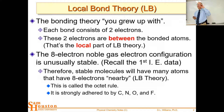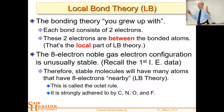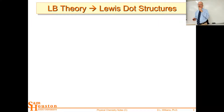This octet rule is really focused on the second row — carbon, nitrogen, oxygen, and fluorine. We don't really apply the octet rule to the third row. We let sulfur expand and have ten electrons around it in sulfuric acid, and sulfur hexafluoride has twelve electrons around it. So this is local bond theory — it should be very familiar to you.